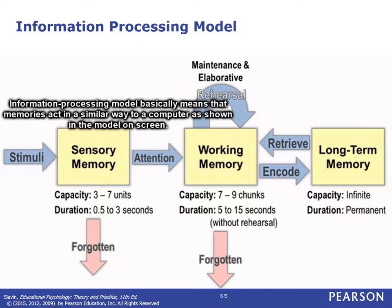A unit might be, for example, looking out the window and seeing a butterfly flying by — that might be one unit of memory. The sensory memory stays there for about half to three seconds, and then the vast majority of that, unless you focused on it, is forgotten. Your brain is receiving all kinds of stimuli right now that you're probably not even noticing — something in your peripheral vision that just stays there briefly and then is forgotten.